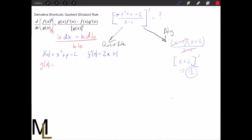g of x is the low function up here. So we see that as x minus 1. And the derivative of g of x is going to be the derivative of x, which is 1. And the derivative of minus 1, which is 0. So that's it. It's just 1.